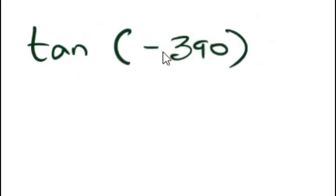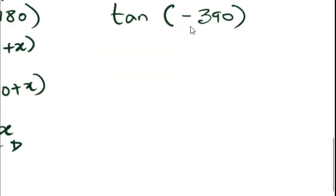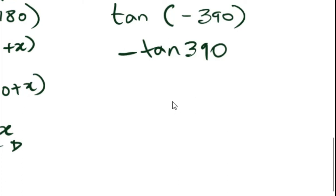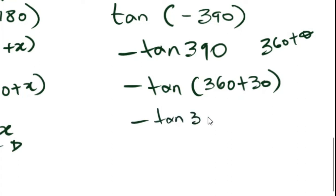The last example is tan of negative 390. Same story — first treat it like it's in the fourth quadrant, so tan is negative. Since 390 is greater than 360, we rewrite it as 360 plus 30. That falls in the first quadrant, and in the first quadrant tan is positive. So this becomes negative tan 30, and since tan 30 is a special angle, you can evaluate that for your final answer.